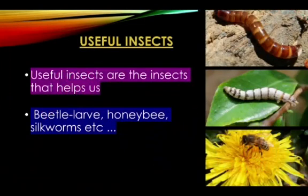Useful insects. Useful insects are the insects that help us. Examples are beetle larvae, honeybee, silkworms, etc. Look at them — they look not so beautiful but they are very helpful to us.